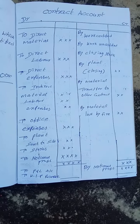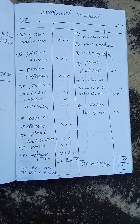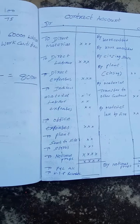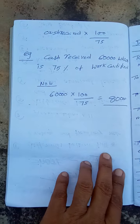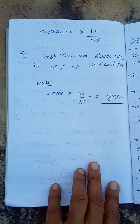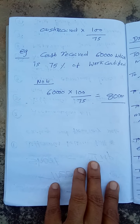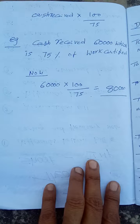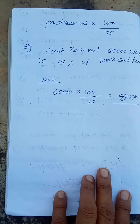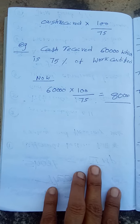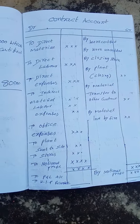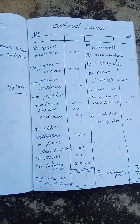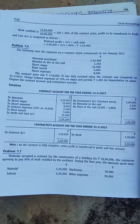Copy this pro forma. Sometimes work certified will not be given; in such a case you calculate it as: cash received × 100 / percentage given. A part will be retained. I will now show you a problem — copy the question and try to do it.